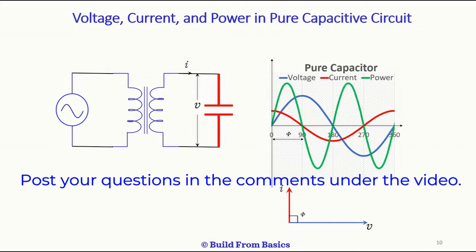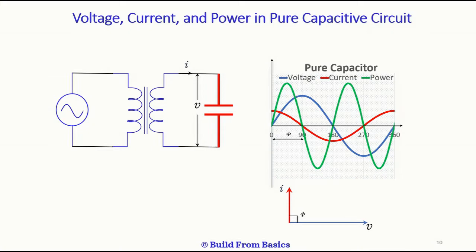Similar to the inductor, in the capacitor the instantaneous power also pulsates between positive and negative half cycles. The frequency of this power is double the frequency of the voltage. So as the voltage has one cycle here shown in the blue curve, the power has two cycles.